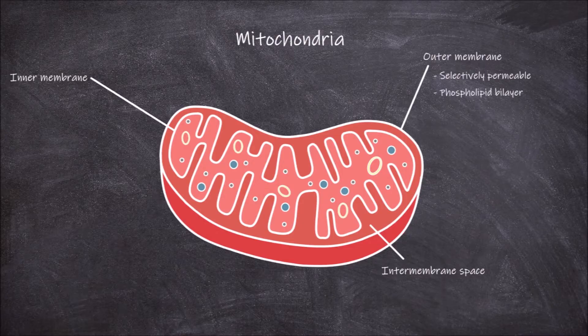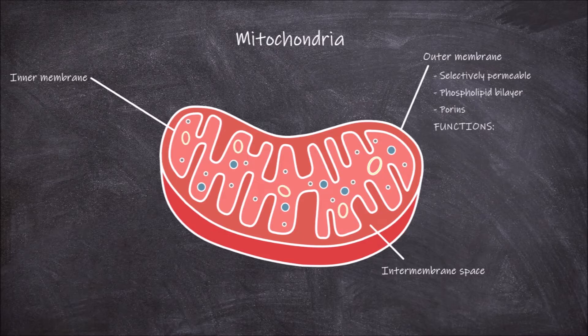This bilayer contains a lot of a certain type of integral membrane protein called porins. These porin proteins act as pores in this membrane, allowing ions and molecules up to the size of the smallest proteins to diffuse across. One main function of the outer mitochondrial membrane is to enclose the mitochondrion, and it also functions in allowing ions and other molecules to move into and out of the mitochondrion.